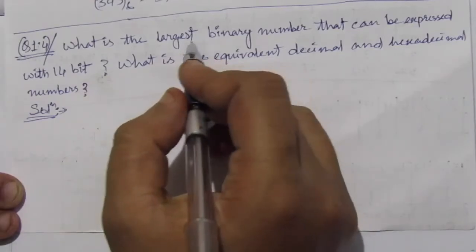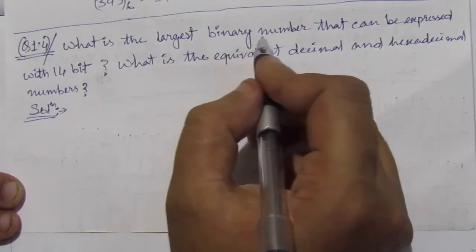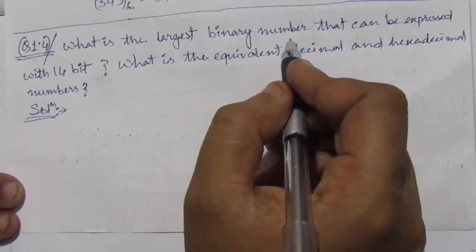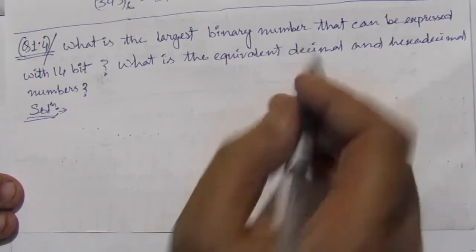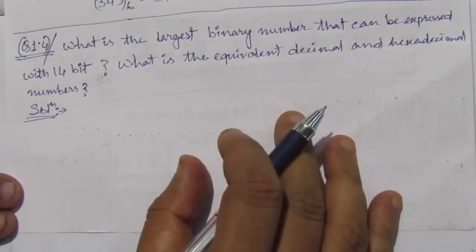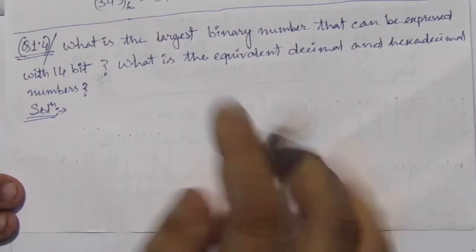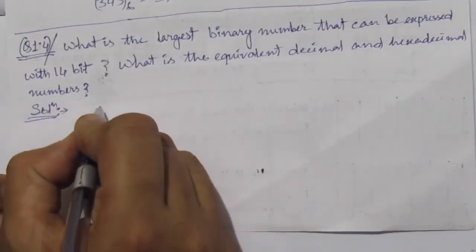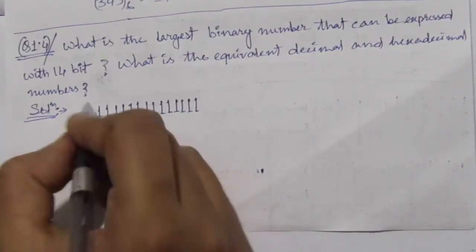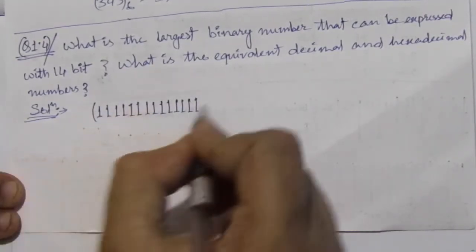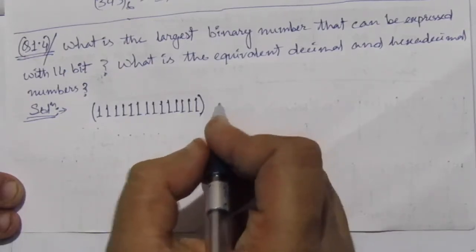We have to write the largest binary number, where the base is 2. In the binary number system, we have only 1 and 0 bits. So the largest number with 14 bits will be 14 ones — this is the largest binary number we can write using 14 bits. The base is 2.